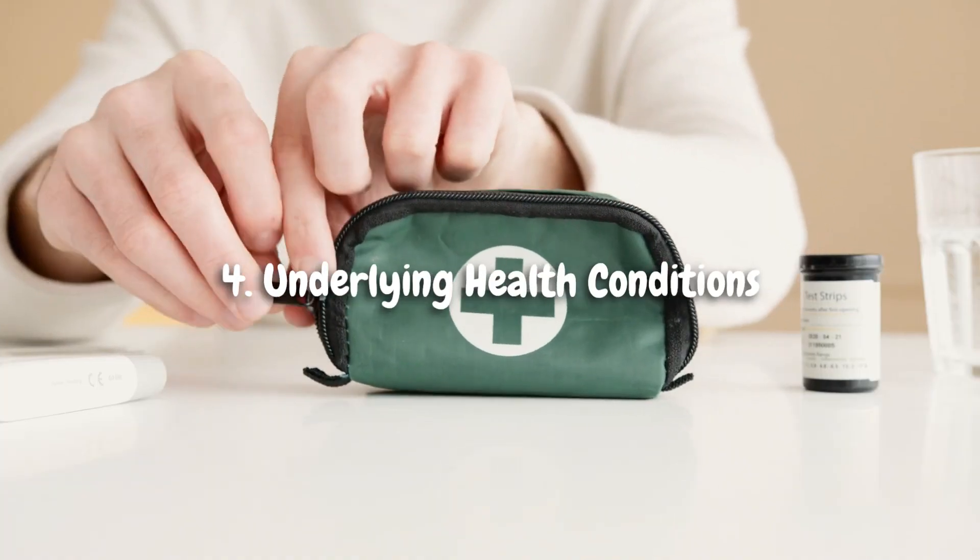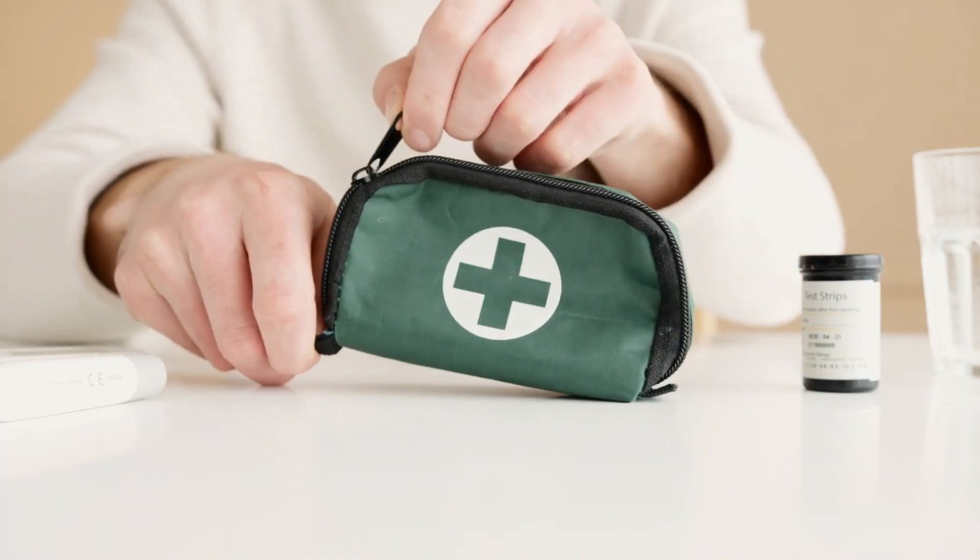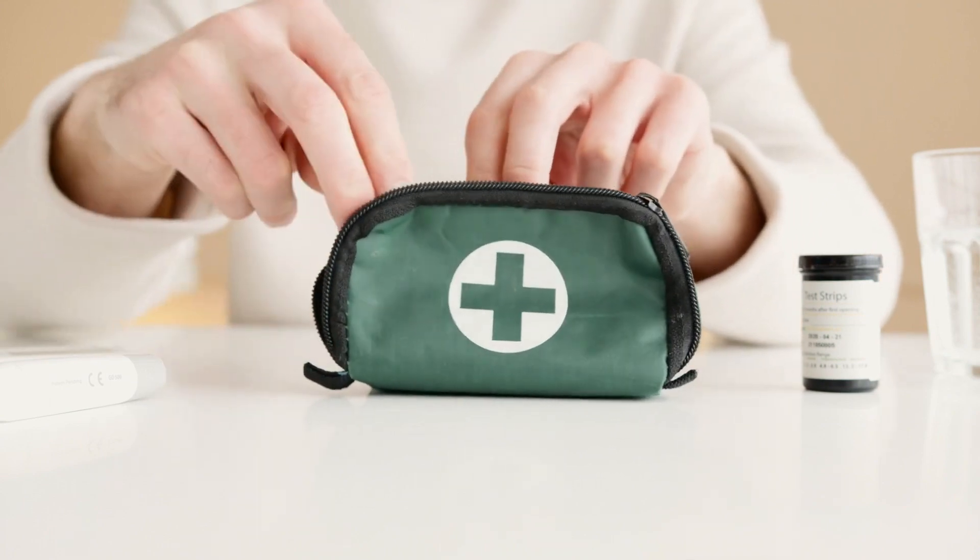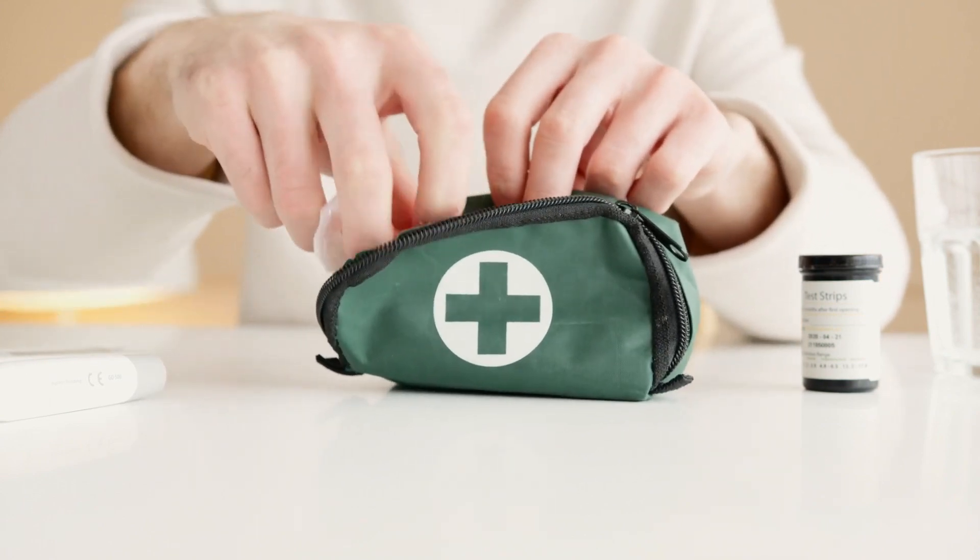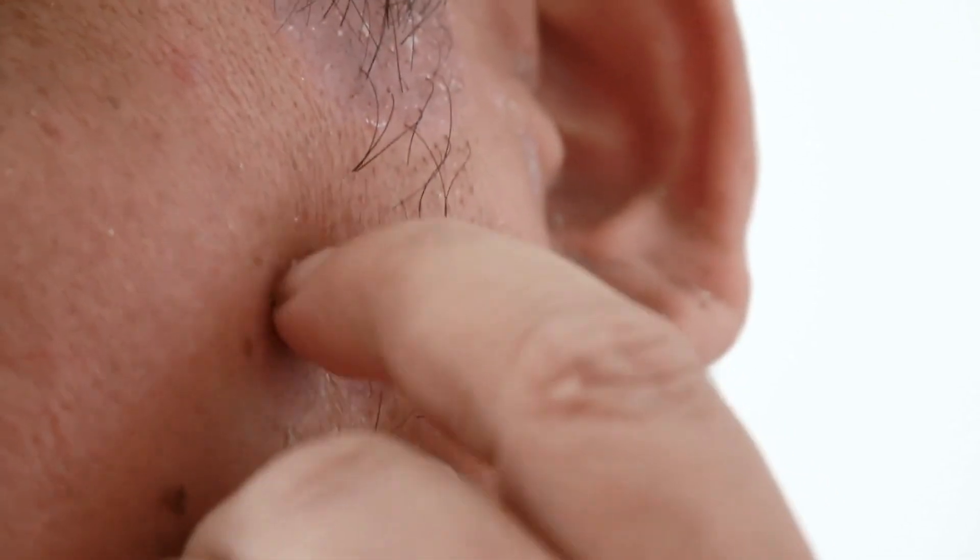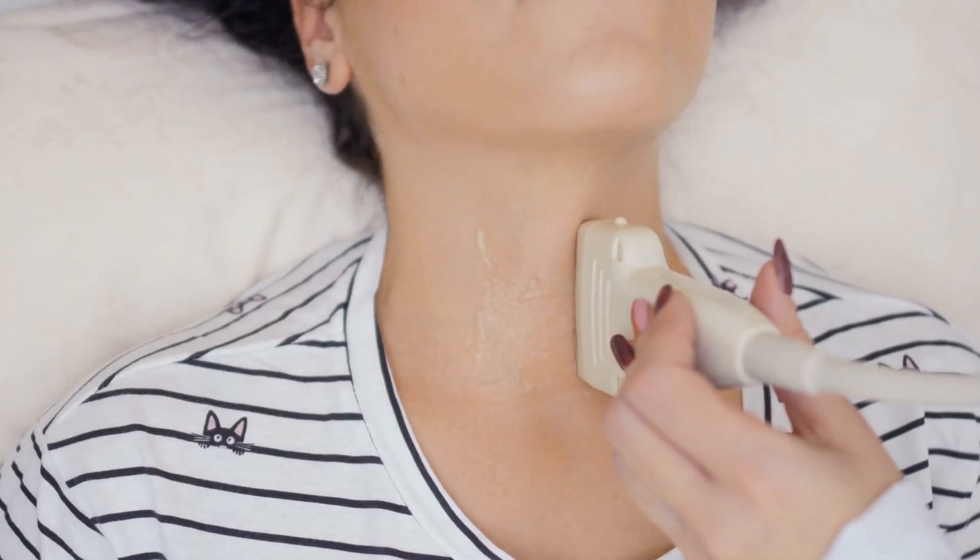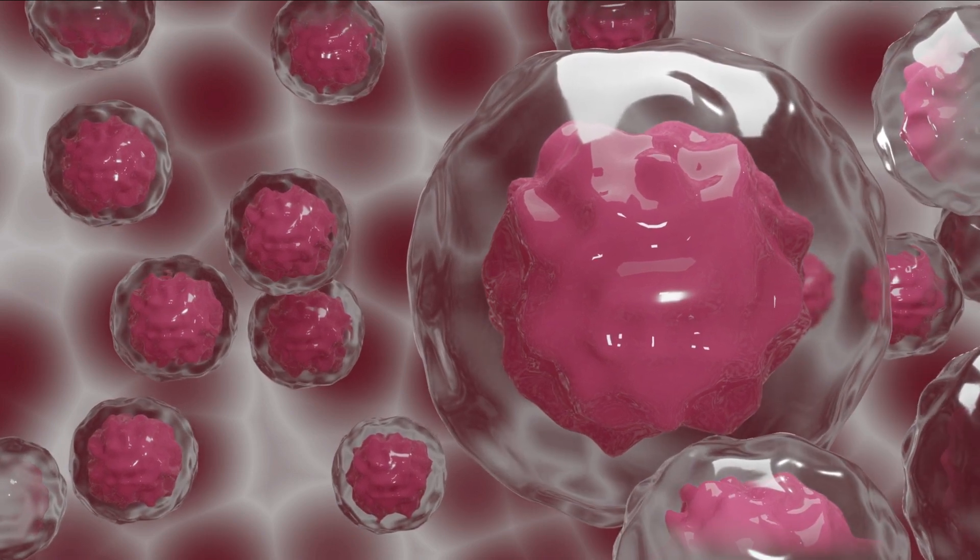4. Underlying Health Conditions. In some cases, vertical lines on nails can be a sign of underlying health conditions. Conditions like psoriasis, eczema, thyroid disorders, and autoimmune diseases can contribute to nail abnormalities.